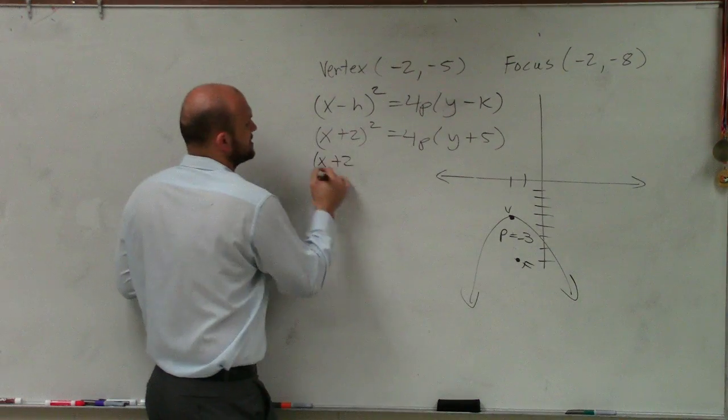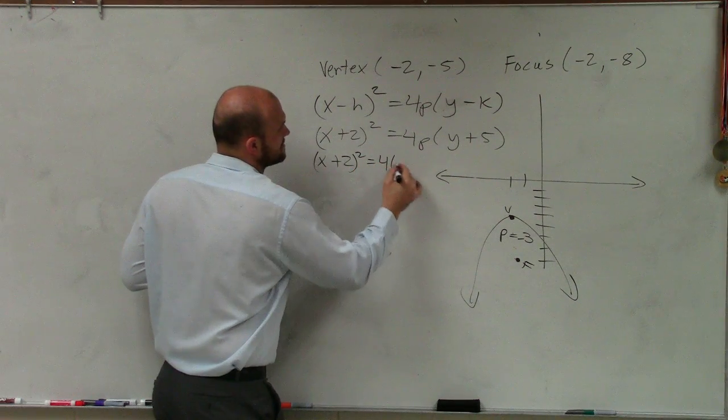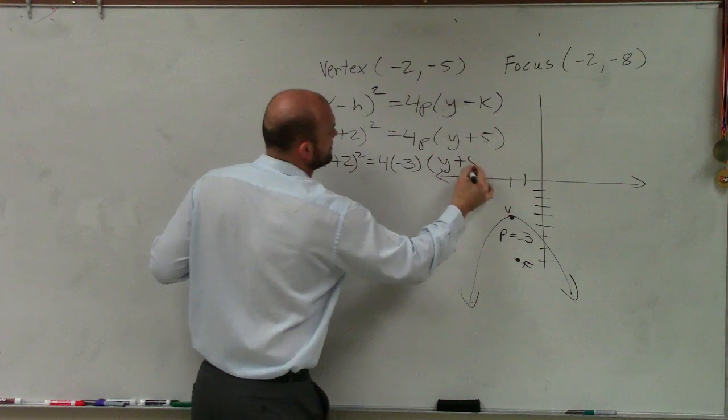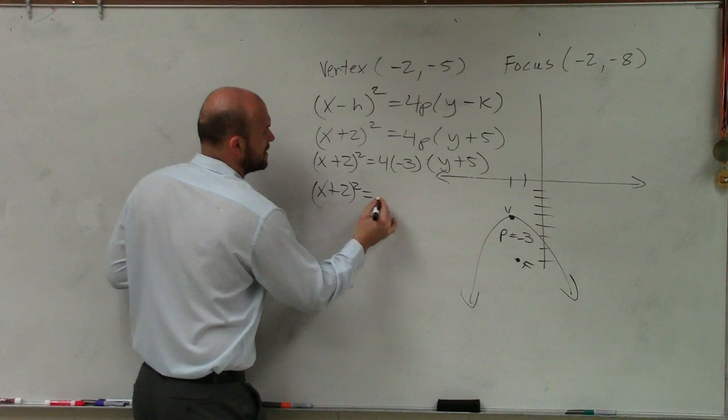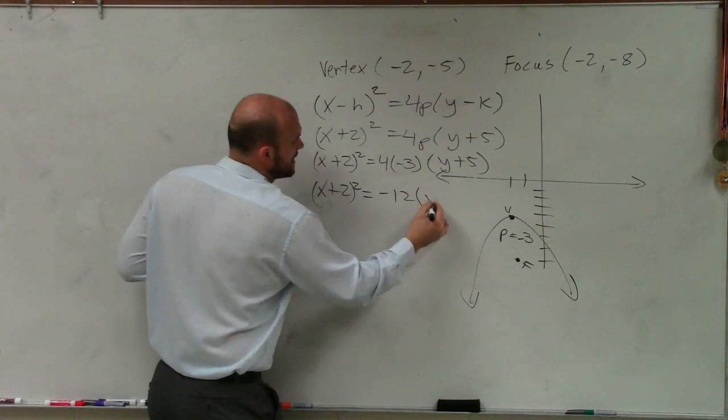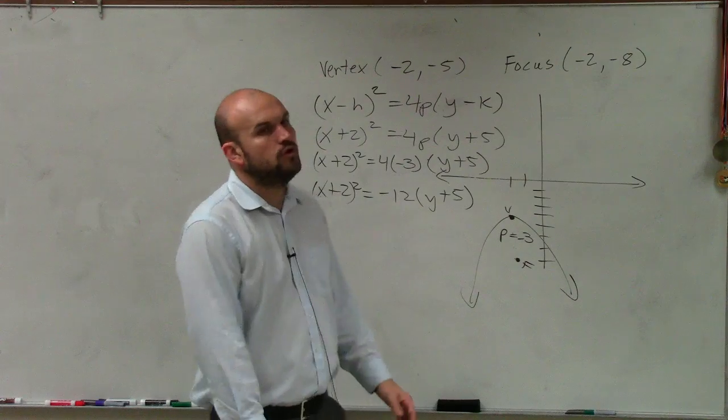x plus 2 squared equals 4 times negative 3 times y plus 5. So therefore, x plus 2 squared equals negative 12 times y plus 5. OK.